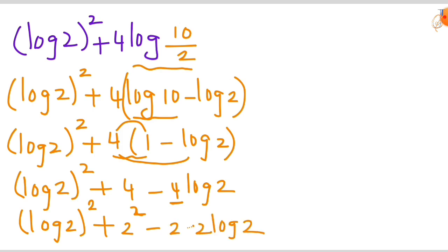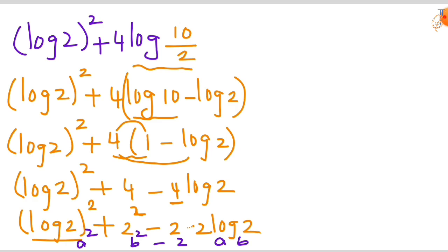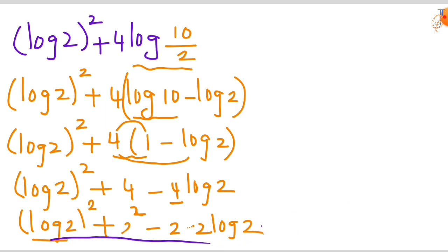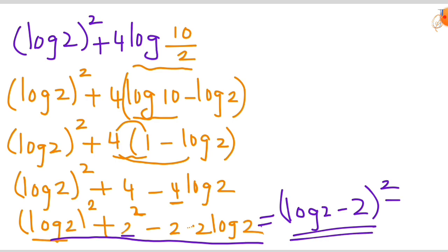Now we can write 4 as 2 times 2. Recognizing this is in the form a² minus 2ab plus b², the discriminant simplifies to (log 2 minus 2) whole squared.